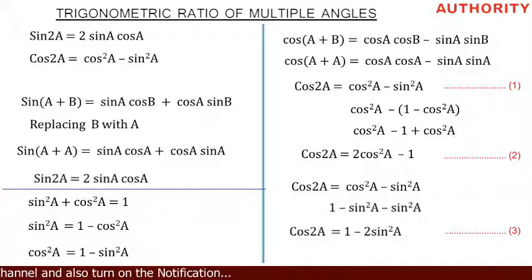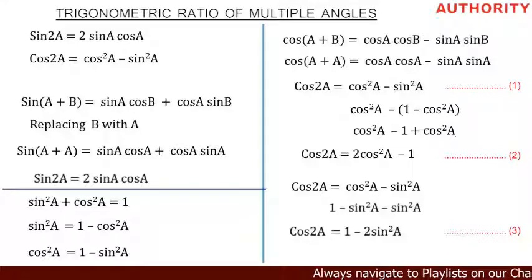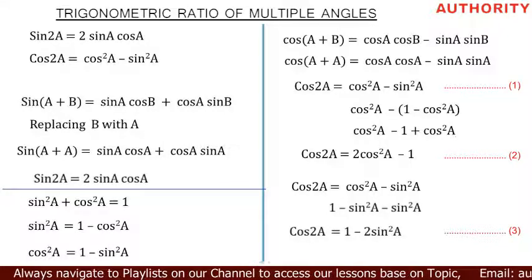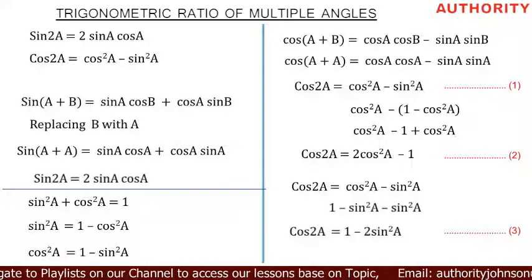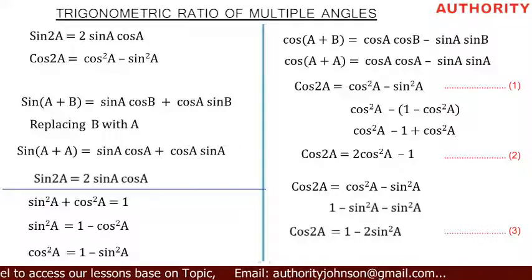In this lesson we have proved that sine 2A equals 2 sine A cos A, and that cos 2A equals cos squared A minus sine squared A, or equivalently 2 cos squared A minus 1, or 1 minus 2 sine squared A. Thank you very much for watching. Please subscribe to our YouTube channel, turn on notifications, like and share this video.